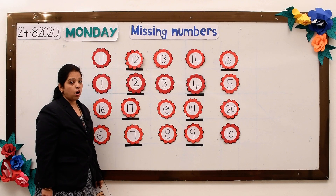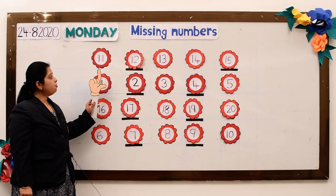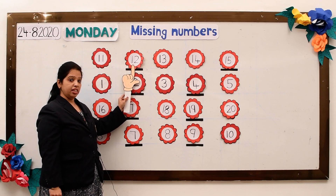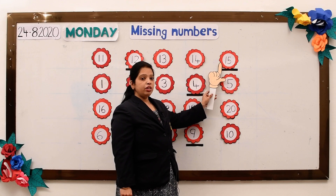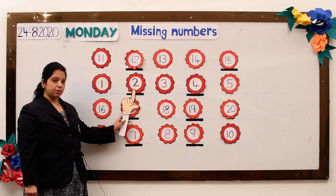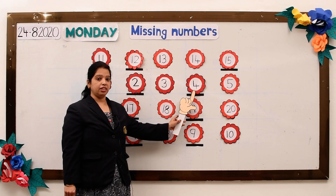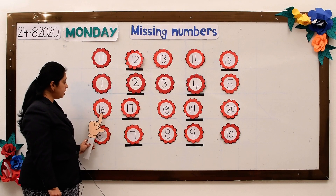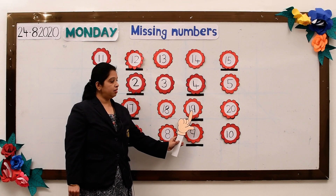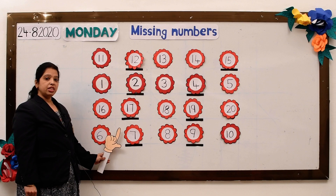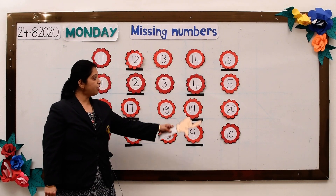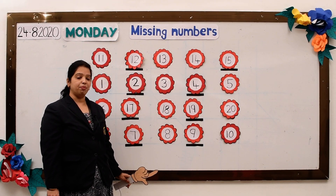Now, children, let us recall the numbers which were missing. In the first row, number 12 was missing and number 15 was missing. In the second row, number 2 was missing and number 4 was missing. In the third line, number 17 was missing and number 19 was missing. In the fourth row, number 7 was missing and number 9 was missing. So children, here we have found all the missing numbers. Thank you.